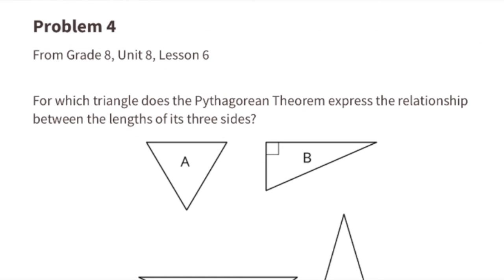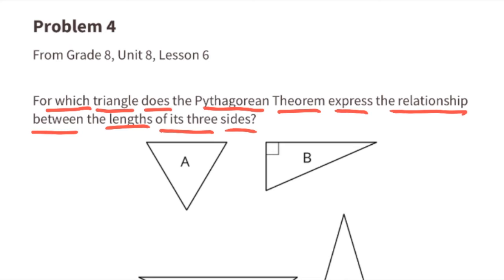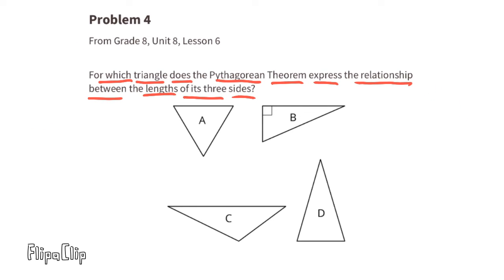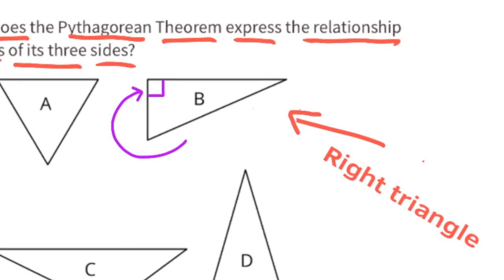Problem number four from Unit 8 Lesson 6: for which triangle does the Pythagorean theorem express the relationship between the lengths of its three sides? Remember, the Pythagorean theorem only works on right triangles, and only one of these triangles is a right triangle — that's triangle B.